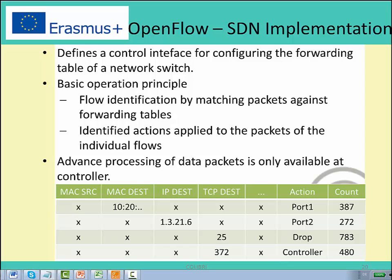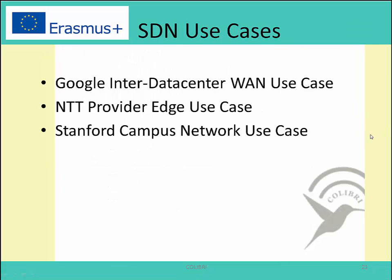More advanced processing of data packets is only available on the controller. If the network switch can't match a flow to any rule in the routing table, it will forward the data to the controller. SDN is considered a future internet architecture, but it is already applied in some networks such as Google's data center network, enterprise provider edge networks, and the Stanford campus network. People expect that SDN will be widely deployed in mobile networks in 3 to 5 years.